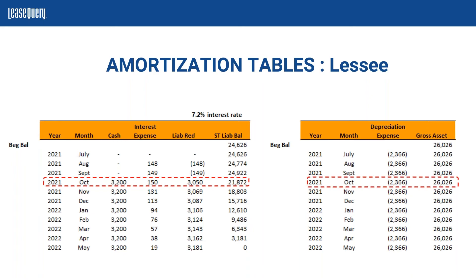This is at the transition date, which happens to be our early access date — $24,626 is our beginning balance line. It's worth noting this is a short-term liability balance because our term is 11 months, so we are going to be settling this over the next 11 months, making it a short-term liability.